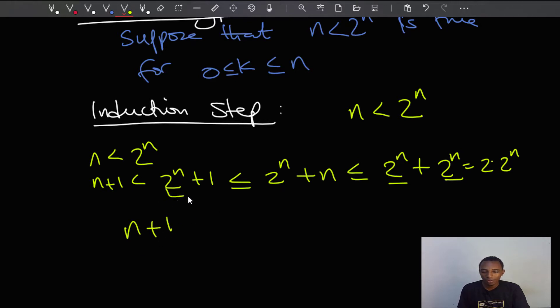So I'll rewrite the whole statement now, n plus 1, and I'll skip everything here. I'll just go to this here. This is less than 2 times 2 to the power n. So n plus 1 is less than 2 to the power, of course, this is 2 to the power 1, so using the properties of indices or powers, that's going to be n plus 1. I'll just add the powers, and this right here is,